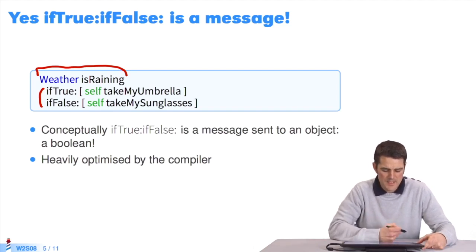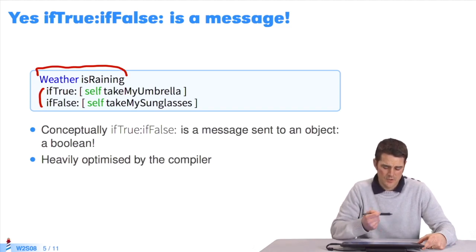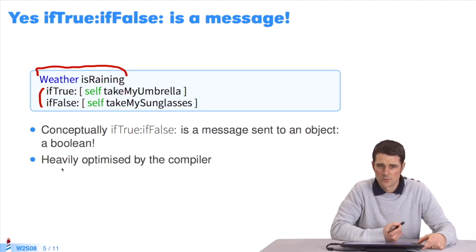Careful! The message ifTrue:ifFalse: is heavily used by Pharo. It's at the heart of the system. It's so important that it's been heavily optimized to be efficient without slowing down the entire system.